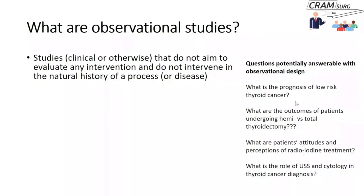You build a big database of thyroid cancer patients, identify those classified as low-risk, pick out prognostic factors you want to study, and run over time to see whether those factors relate to clinical outcomes. Another question could be: what are the outcomes of patients undergoing hemi versus total thyroidectomy? You could compare two cohorts from different hospitals — one where hemi-thyroidectomy is standard practice and another where total thyroidectomy is standard — and compare outcomes. You haven't intervened in what is naturally going to happen, so it's still observational.